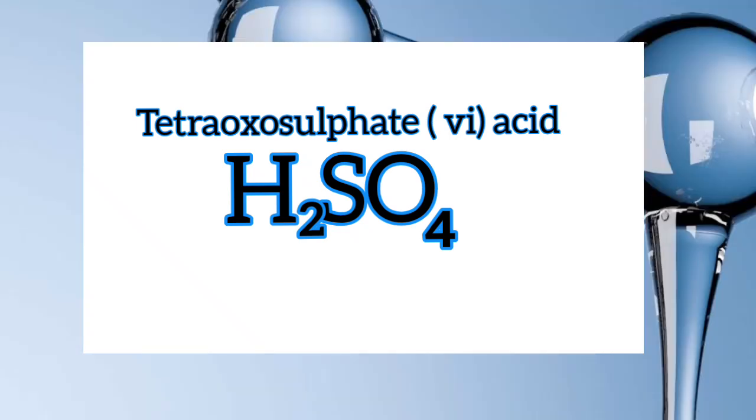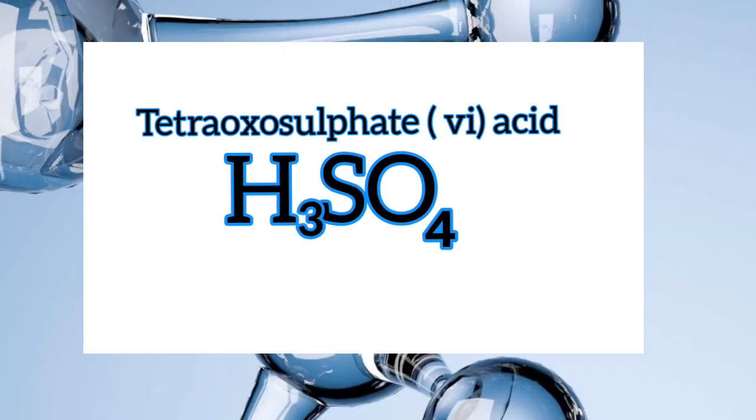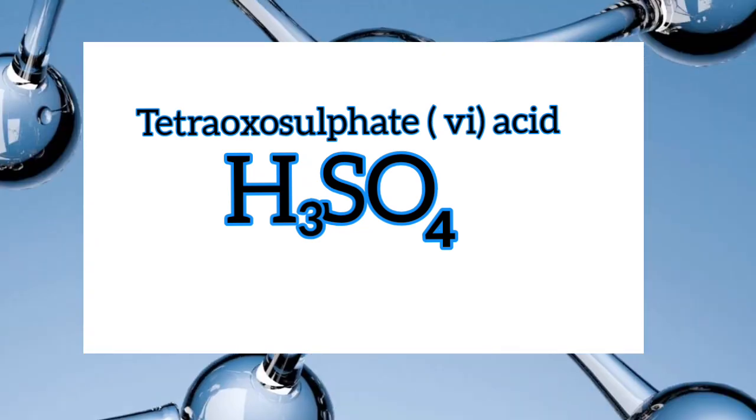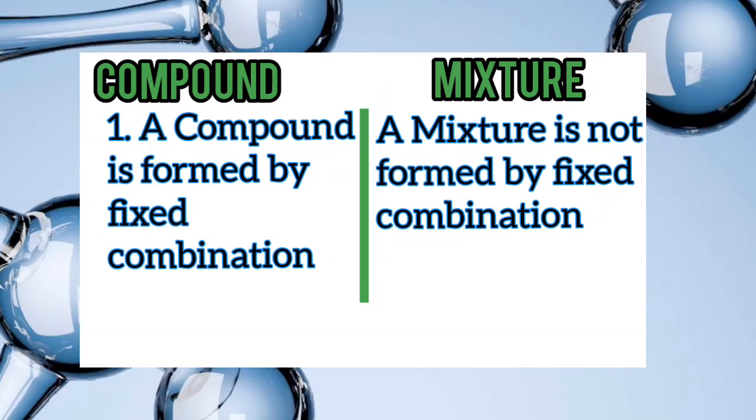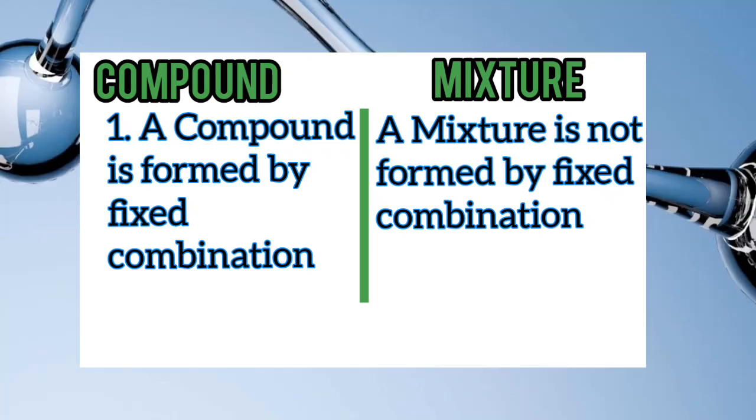The number one difference between a mixture and a compound is that a compound is formed by a fixed combination. For example, in tetraoxosulphate(VI) acid, if the hydrogen atoms change from two to three, it will no longer be the same compound — there must be a fixed composition. But for the garri and water mixture, whether the garri is more than the water or the water is more than the garri, it is still a mixture of garri and water. So a compound is formed by a fixed combination, while a mixture is not.